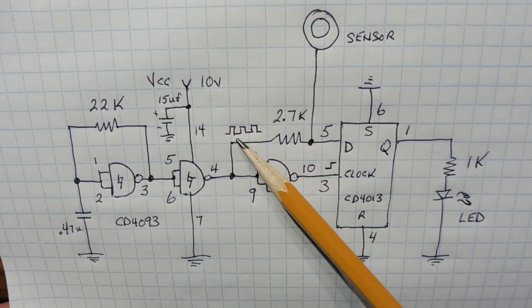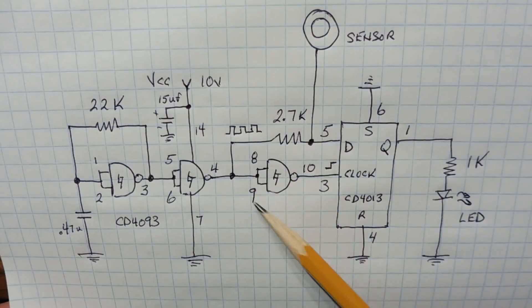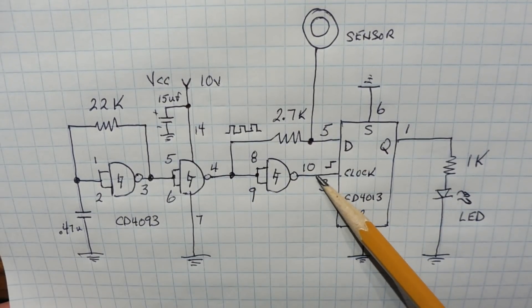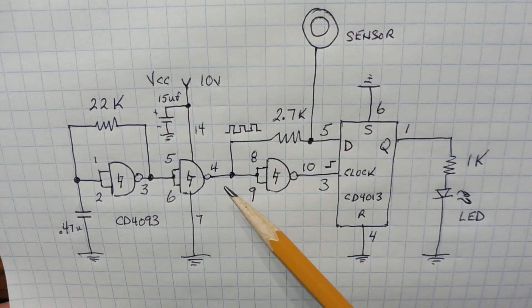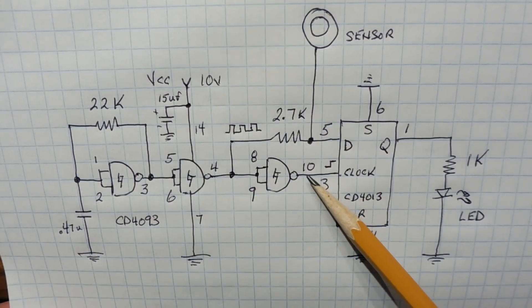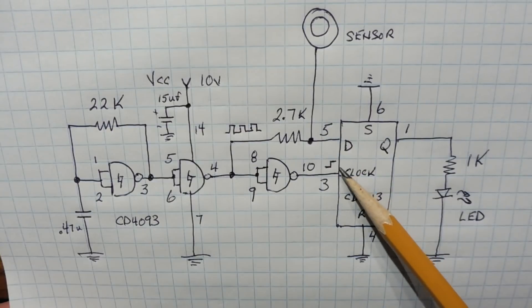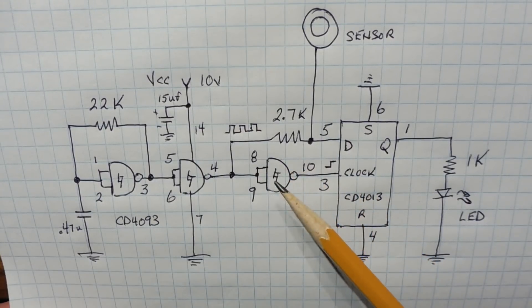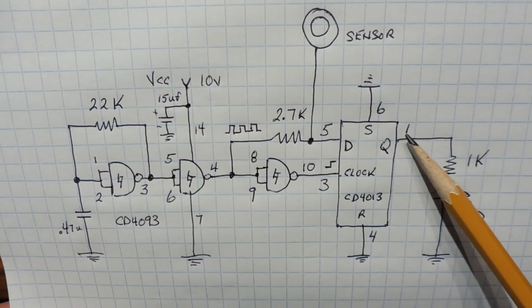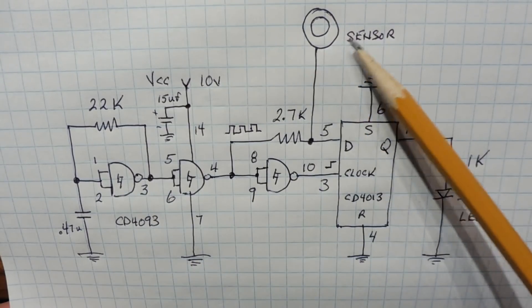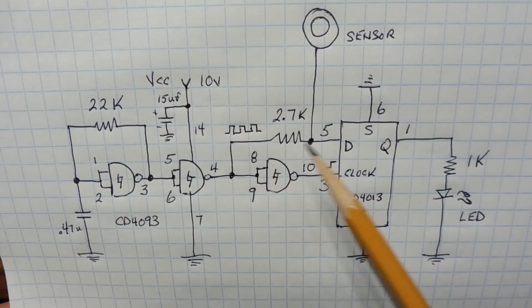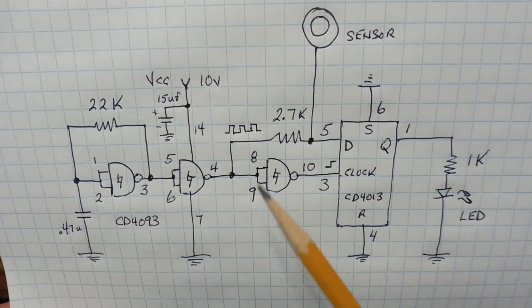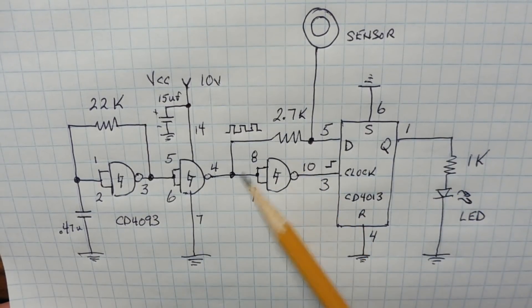Now when the clock is high, we'll have a high on the D input, we'll have a high on the input of this inverter, and we'll have a low on the output of this inverter feeding the clock. Now when the clock goes low, the D will go low, and the input to the inverter will go low, and then after a propagation delay, the output of this inverter will go high and trigger the clock. This propagation delay ensures that the output will always be a zero when there's no touch sensor being activated. So every time the clock goes from a high to a low, we'll always clock out a zero when the LED will be off because of the propagation delay of this inverter.